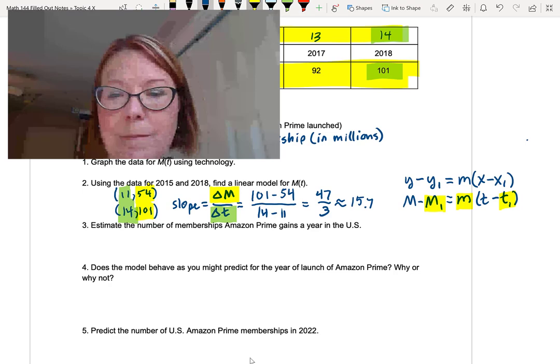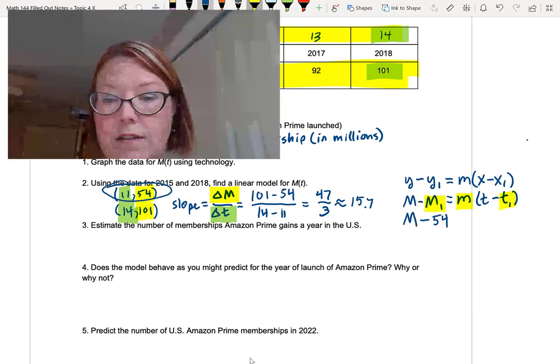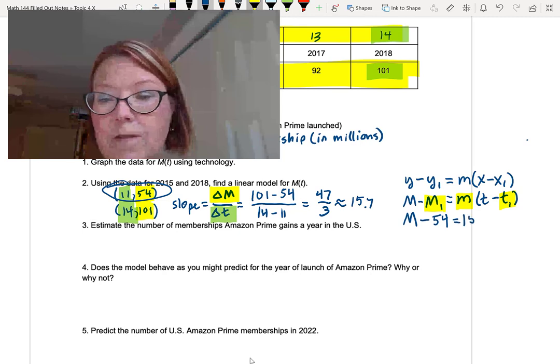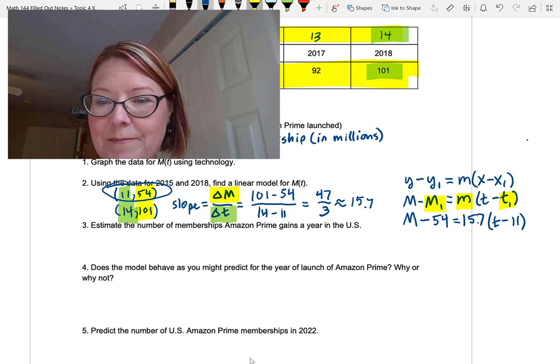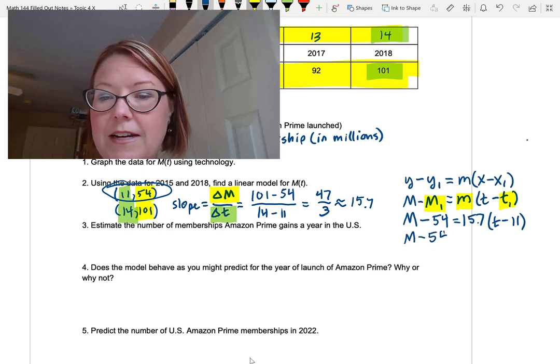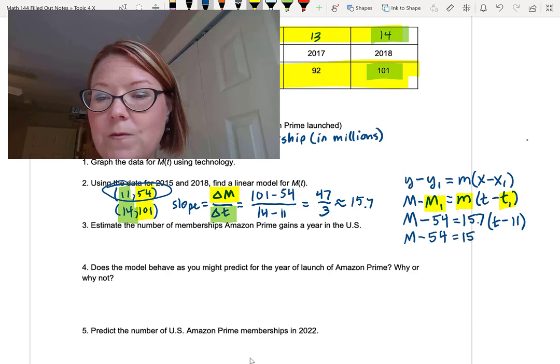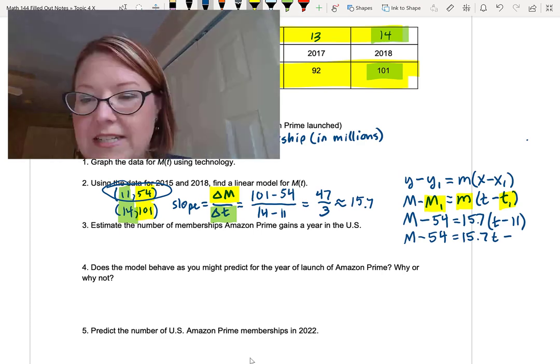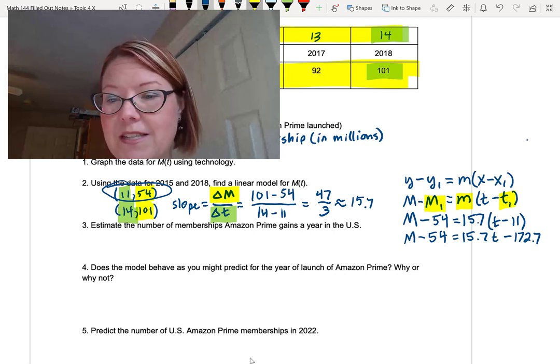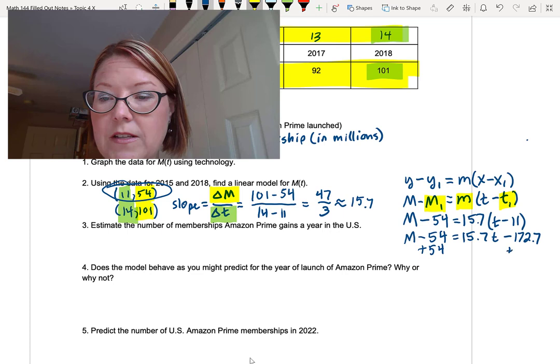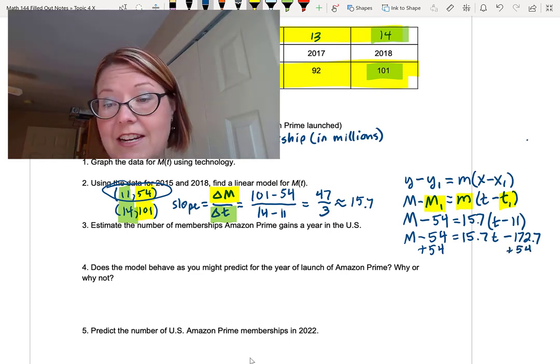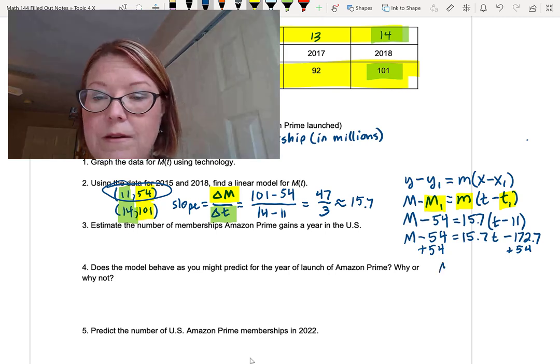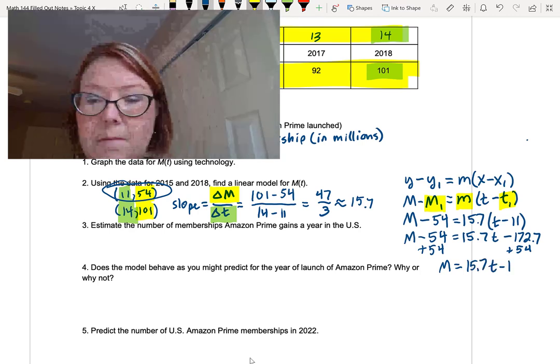Now we have M minus, and let's just use this top point. The M value is 54 equals the slope, which is 15.7 times parentheses, T minus 11. Now let's just simplify that a little bit. Let's do the distribution. M minus 54 equals 15.7 T minus, and then we've got to do 11 times 15.7, 172.7. Finally, we want to add 54 to both sides. I'm going to use a little shorthand here and just write plus 54 under the left side and the right side. The left side will have M by itself, and the right side will have 15.7 T minus 118.7.